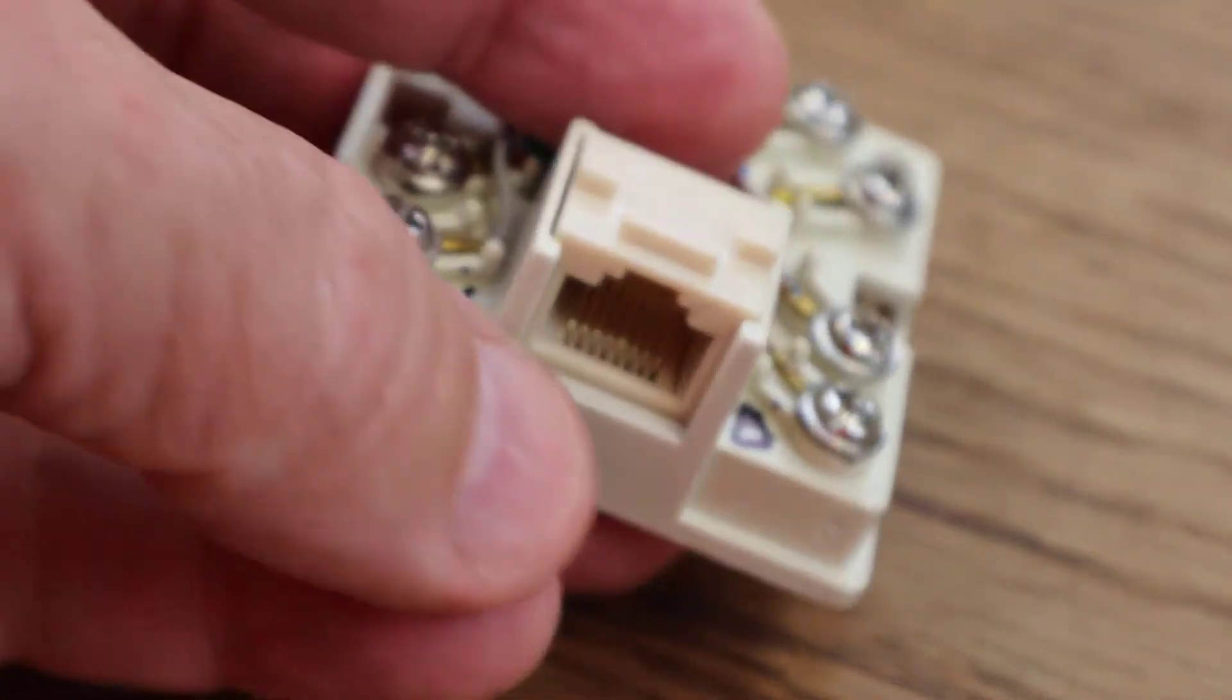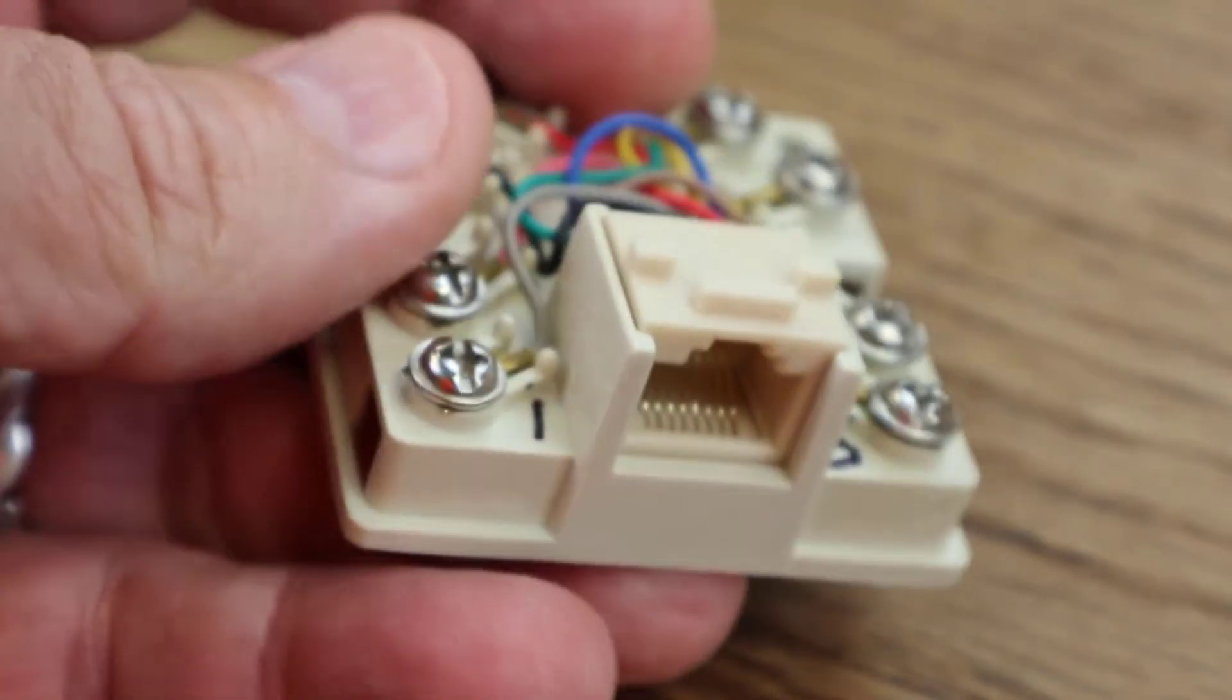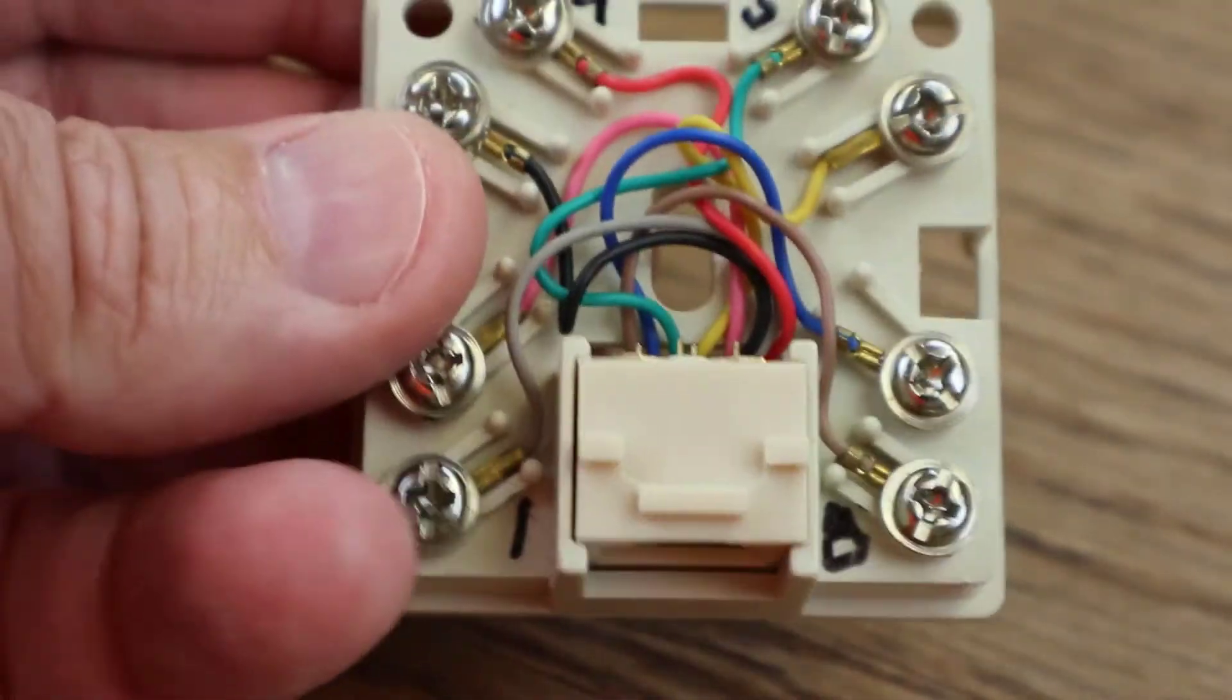And if you put your continuity checker on the furthest pin to the right, then over to this terminal number eight, it would light up and indicate that those touch and the same with four and five.